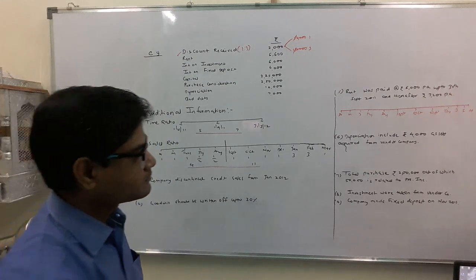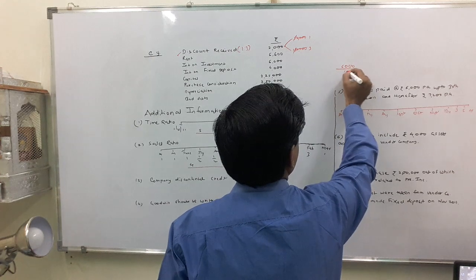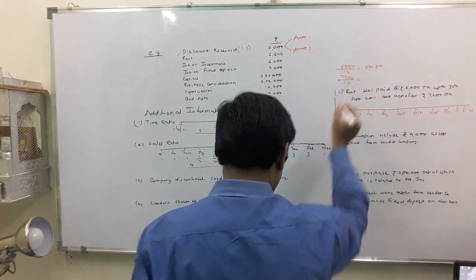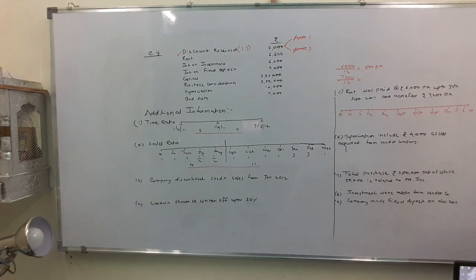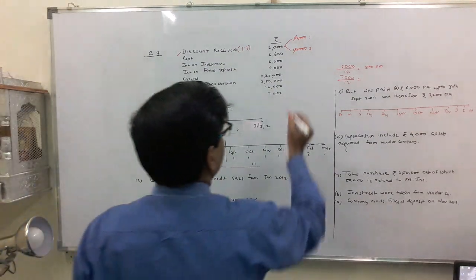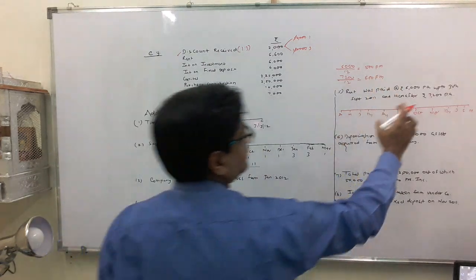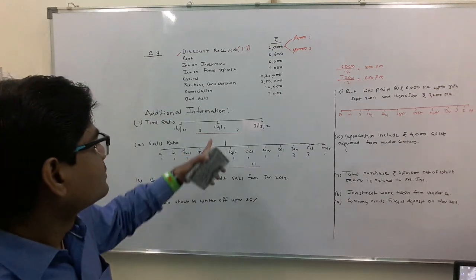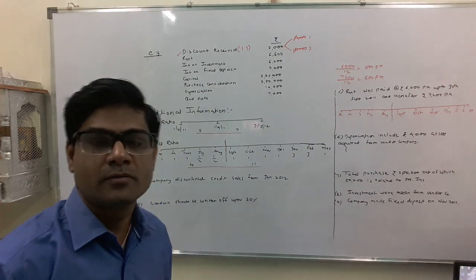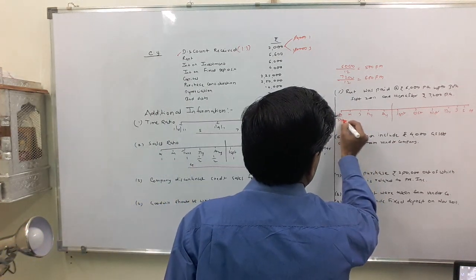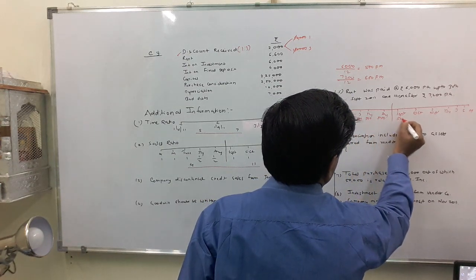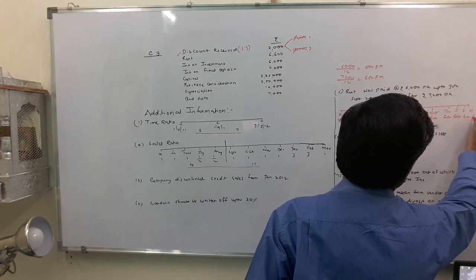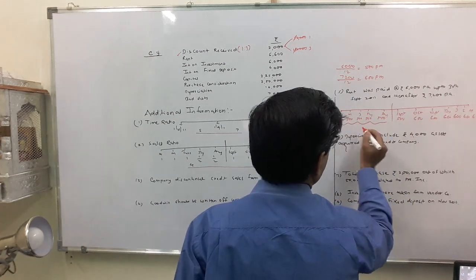We make a 12-month table from April to March. First rate: 6,000 per annum divided by 12 = 500 per month. Second rate: 7,200 per annum divided by 12 = 600 per month. Up to 30th September, the rate is 500 per month. Then divide the 12 months into pre and post at 1st September. Pre period: 500 per month. Post period from October: 600 per month. Cumulative totals work out to 2,500 pre and 4,100 post.